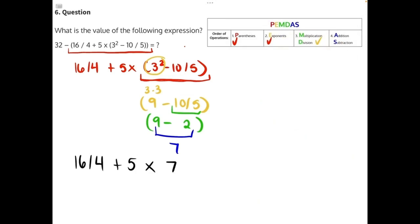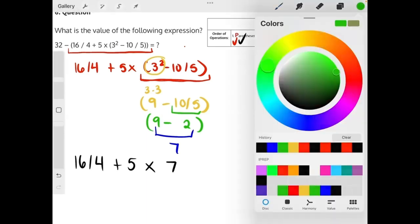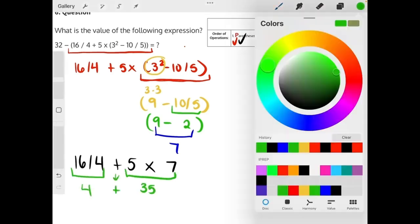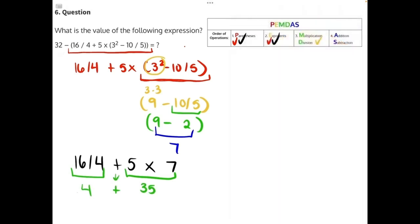Now we've done our parentheses. There's no exponents. We can move on to multiplication and division. 16 divided by 4 and 5 times 7. The first will give us 4 and the second will give us 35. They're being added together. So our last step here would be addition and subtraction. 4 plus 35 would give us 39.